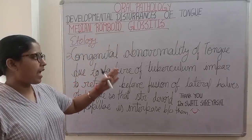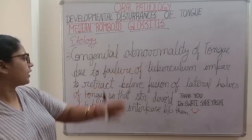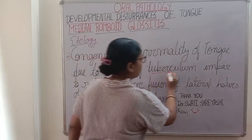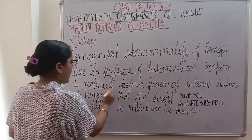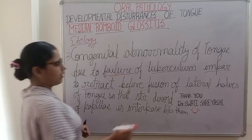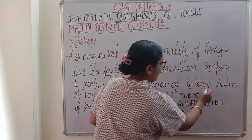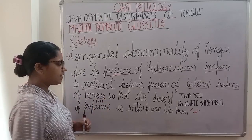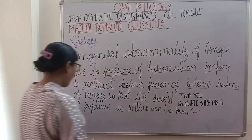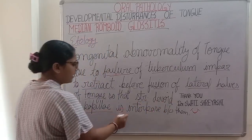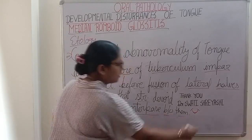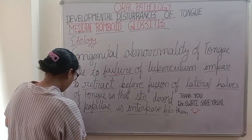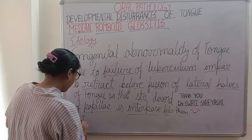In etiology, there is a congenital abnormality of the tongue due to failure of the tuberculum impar to retract before fusion of the lateral halves of the tongue, so that structure devoid of papillae is interposed between them. It also works as a fungal infection.